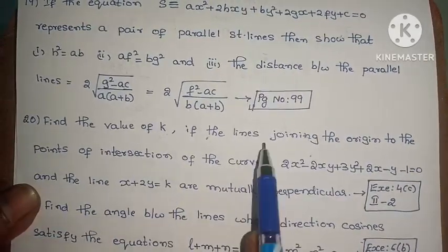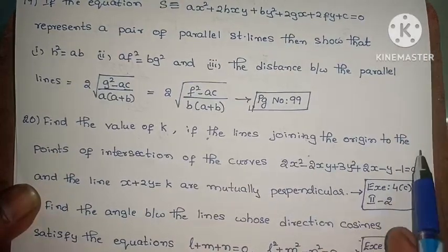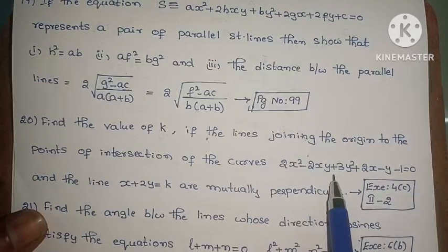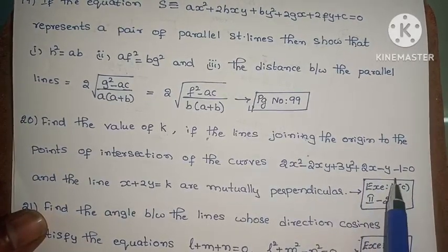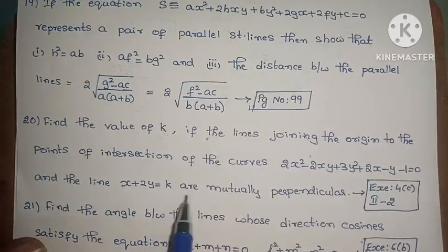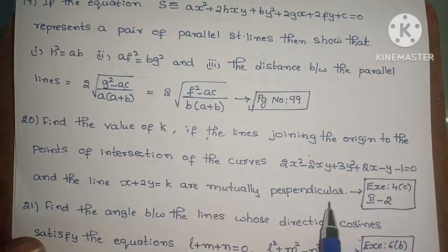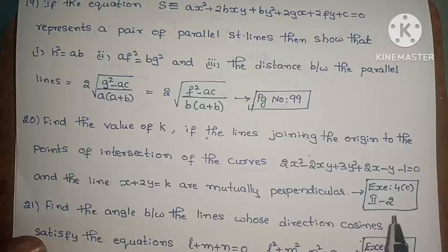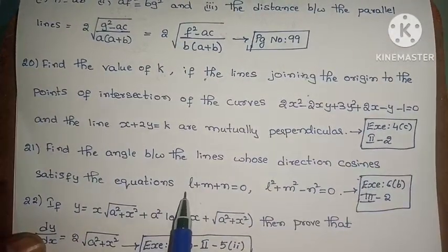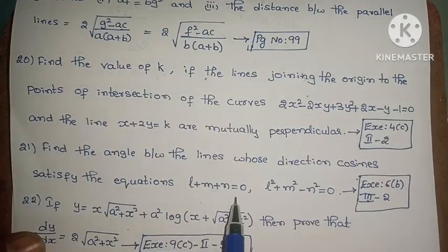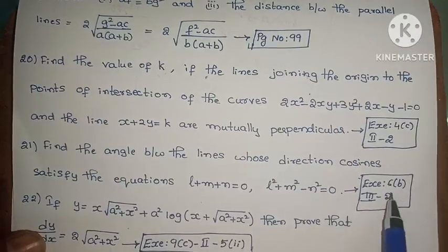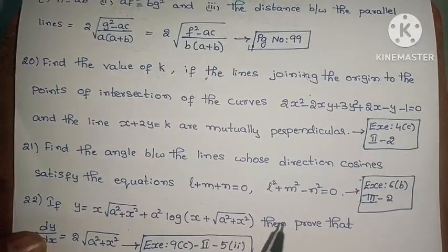Next, find the value of k if the line joining the origin to the point of intersection of the curves 2x squared minus 2xy plus 3y squared plus 2x minus y minus 1 equals 0 and the line x plus 2y equals k are mutually perpendicular. Exercise 4c, second roman law, second one. Next, find the angle between the lines whose direction cosines satisfy the equations l plus m plus n equals 0 and l squared plus m squared minus n squared equals 0. Exercise 6, third roman law, second one.